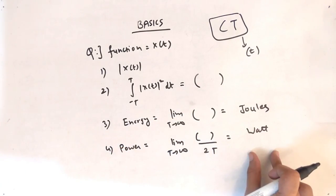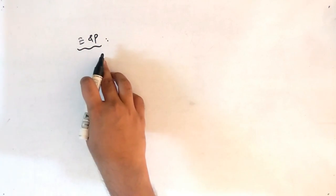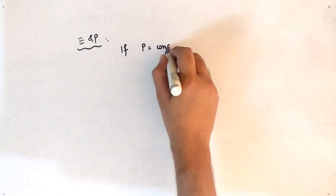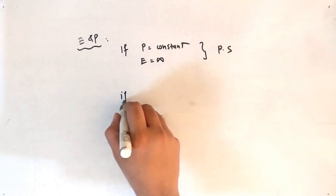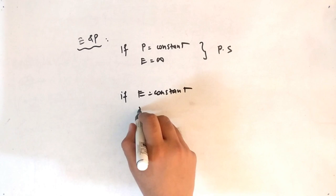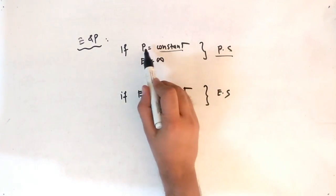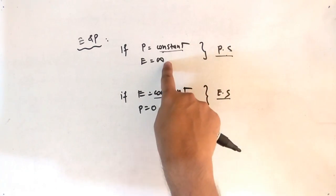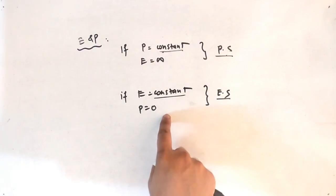Now the question is: how do you determine whether a signal is an energy signal or a power signal? If power is some constant and energy is infinity, it is a power signal. If energy is some constant and power is zero, it is an energy signal. So whatever is constant defines the signal type — and if power is constant, energy is necessarily infinity, and if energy is constant, power is necessarily zero.